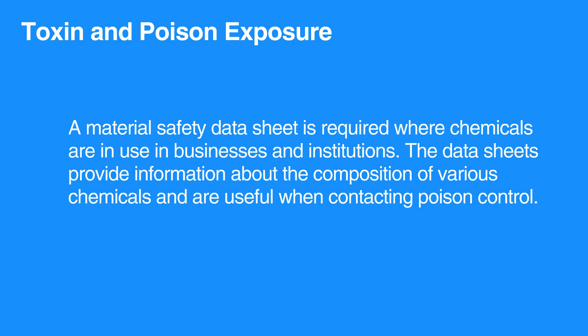A material safety data sheet, or MSDS, is required where chemicals are in use in business and institutions. The data sheet provides information about the composition of various chemicals and is useful when contacting poison control.